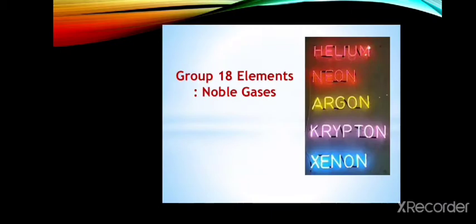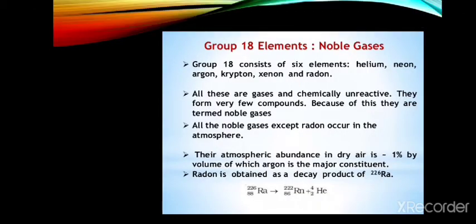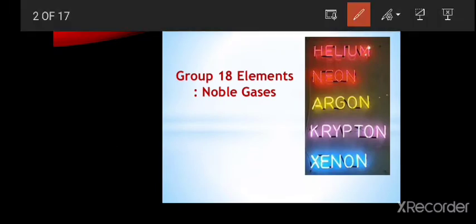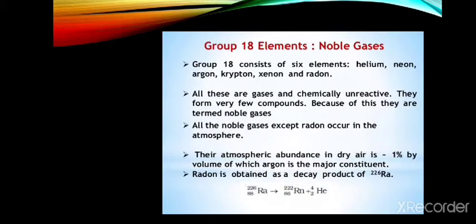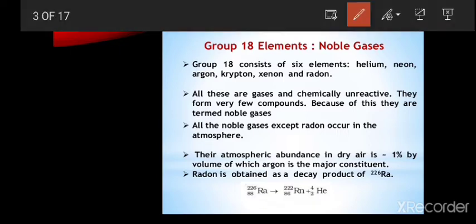Zero group elements, also called 18th group elements or noble gases, consist of six elements: helium, neon, argon, krypton, xenon, and radon. All these are gases. These elements have inappropriate names like inert gases, rare gases, and zero group elements, but the appropriate name is noble gas.